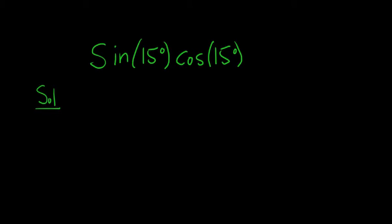So whenever you have a sine times a cosine, a common identity that you can use is sine 2x equals 2 sine x cosine x.